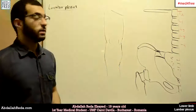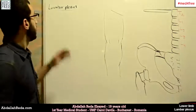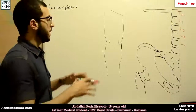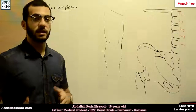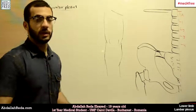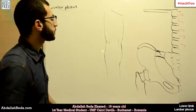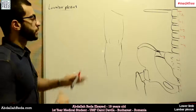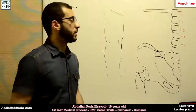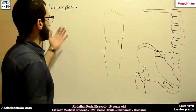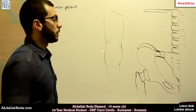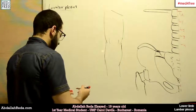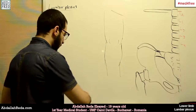Today we're going to talk about the lumbar plexus. The lumbar plexus is a plexus that innervates the lower limb along with another plexus called the sacral plexus. The lumbar plexus originates from the ventral rami of the lumbar vertebrae — that's why it's called the lumbar plexus — and it gives some important nerves that innervate the lower limb.